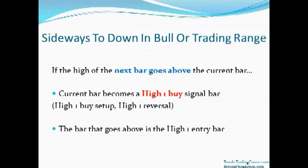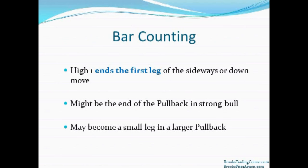Not a bear trend. If the high of the next bar goes above the high of the current bar, the current bar becomes a high one buy signal bar. You can call it a high one buy setup or a high one reversal. The bar that goes above the high is the high one entry bar — that would be the bar in which you enter the trade. You'd place a buy stop one tick above the high of the signal bar.